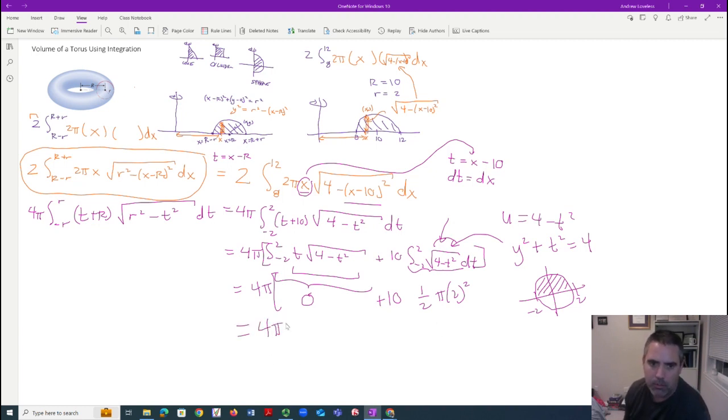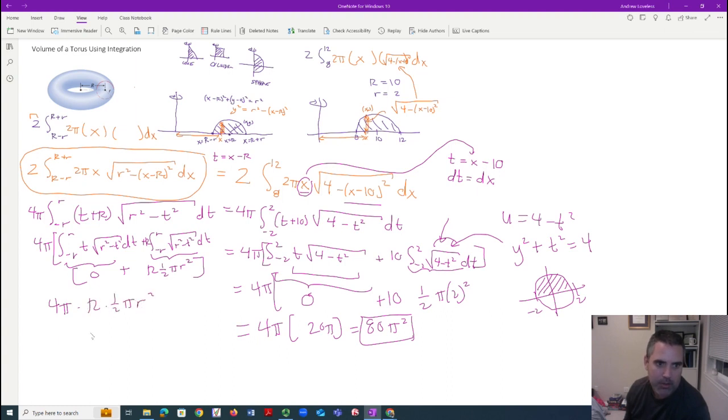When all was said and done, we had 4π. This was 20π, and this became 80π². That's the volume of that particular torus. If you do the same thing over here and expand, you get the integral from negative r to r. This becomes r². This becomes r² minus t² dt. This is half the area of the circle. This ends up being zero if you do substitution. Our final answer is 4π times R times half times π r². So it's 2π² times big R times r².